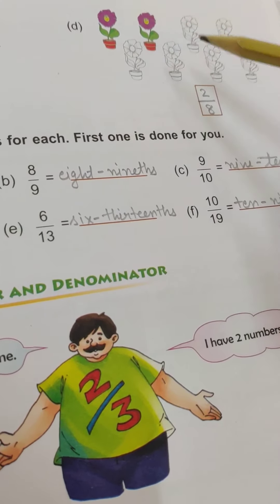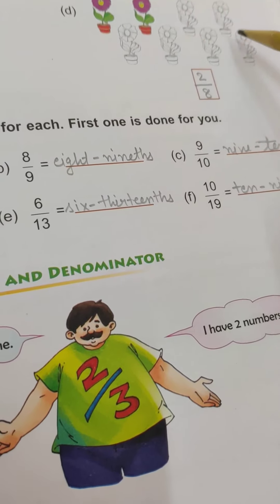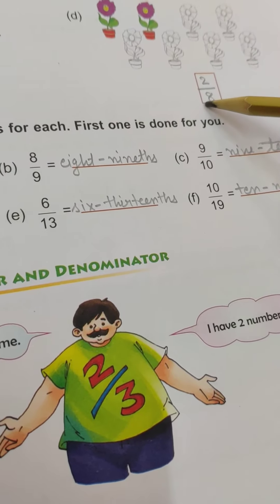Next, see, shaded figures are 2, so numerator is 2, and total you count, so you count how many figures are there? 8. Means 2 by 8.